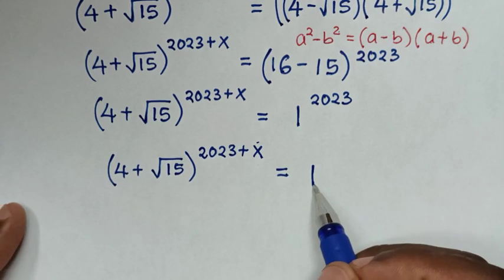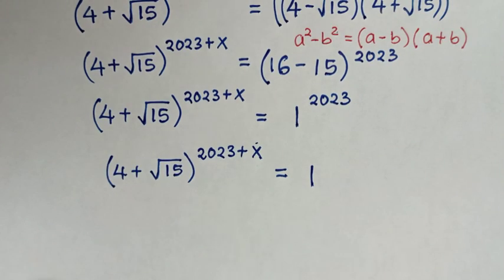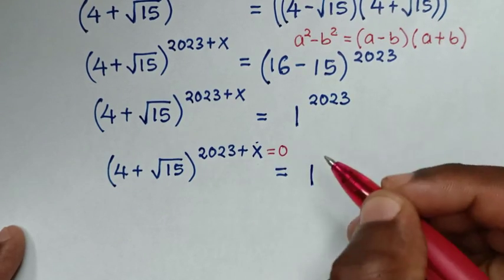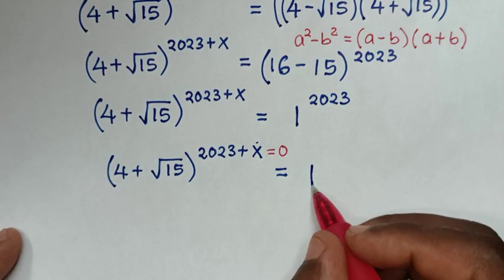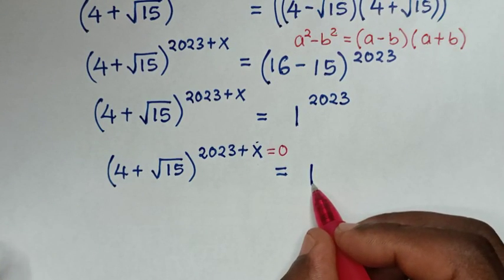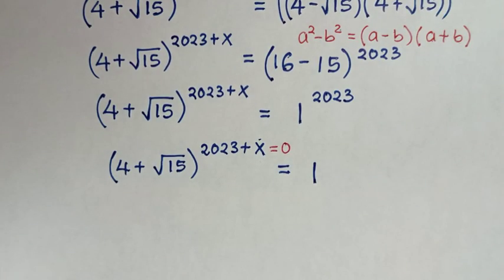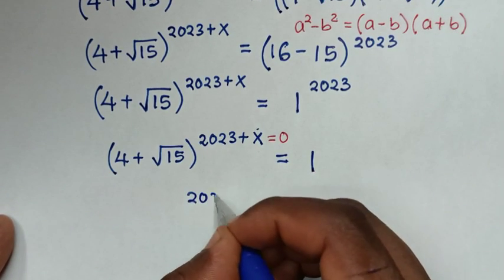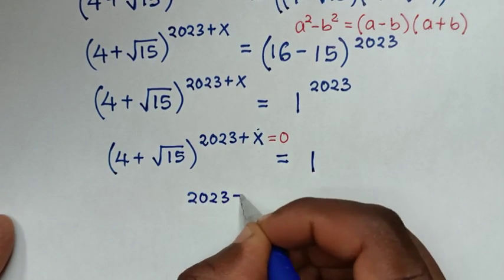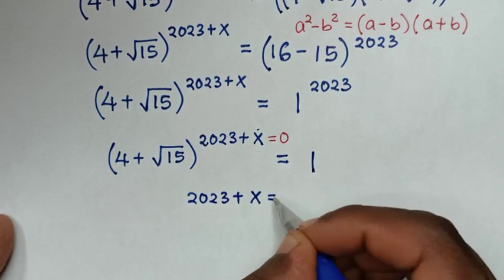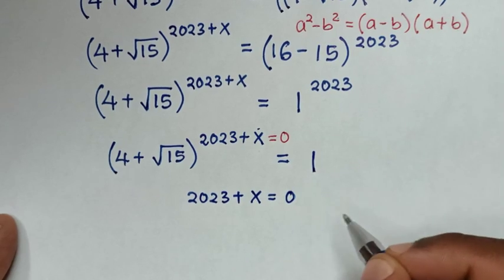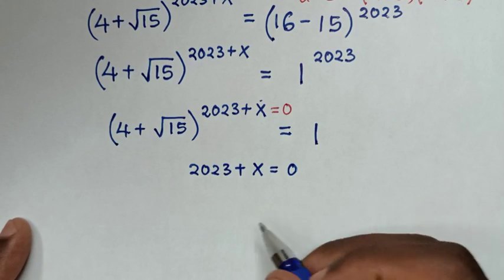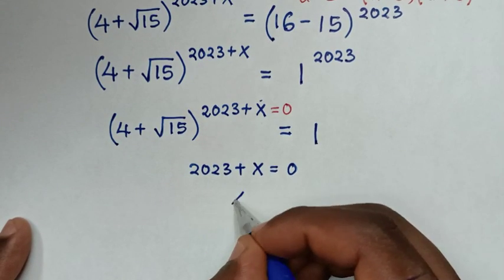Since any number to the power of 0 equals 1, this exponent must equal 0. So 2023 plus x equals 0. Taking 2023 to the right side, x equals negative 2023.